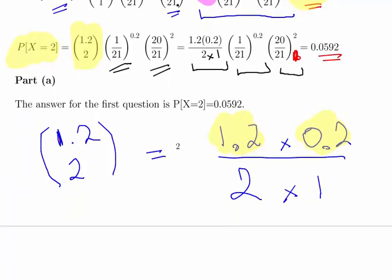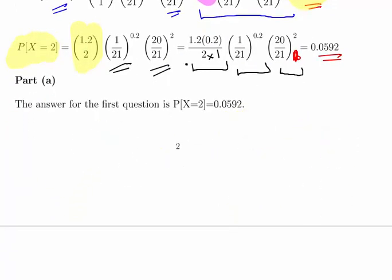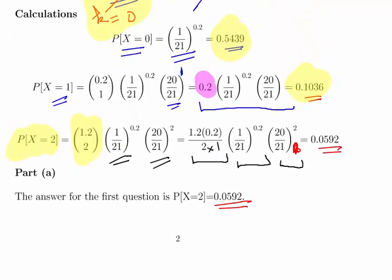So the answer to the first question is, what is the probability of x equal to 2? That there's two claims. Well, it's 5.92% or 0.0592. We've done all the calculations there. We don't really need to go through them anymore. But essentially, we're using these numbers here.